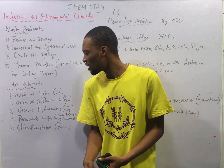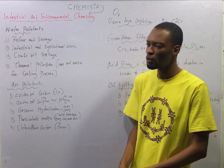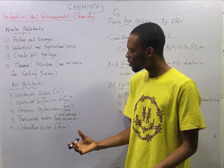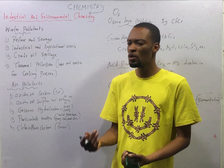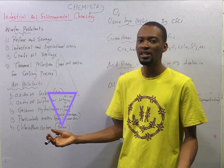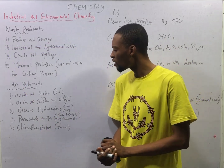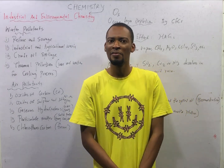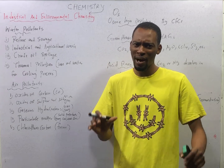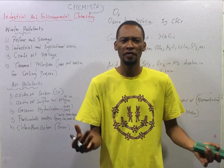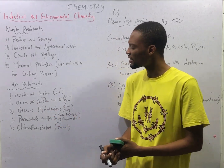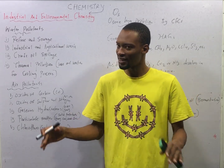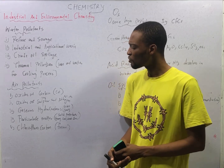Air pollutants include oxides of carbon. For example, incomplete combustion creates carbon monoxide (CO), which will affect your breathing. Oxides of sulfur and nitrogen are also air pollutants because they dissolve in water to form acid rain. Key examples are sulfur dioxide (SO₂), nitrogen monoxide (NO), and nitrogen dioxide (NO₂). These are the oxides of sulfur and nitrogen that are air pollutants.